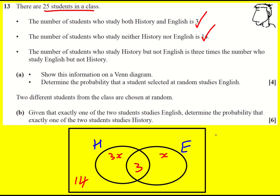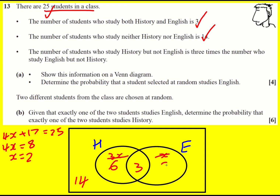We can add them together: 4x plus 17, and that must equal the total number of students, which is 25. So 4x will equal 8, and x will equal 2. I can get rid of that and change that to 6, and change that to 2.